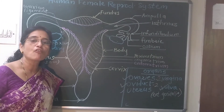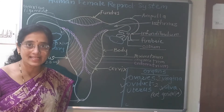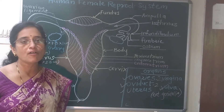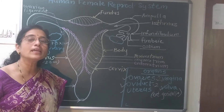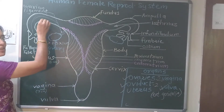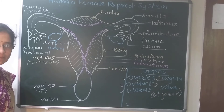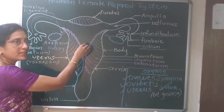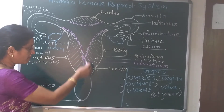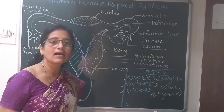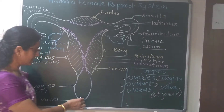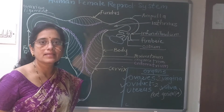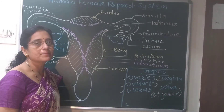This system performs the function of formation of gametes. Eggs or ovum is the female gamete. So the female reproductive system performs the function of formation of female gametes, union of male and female gametes — that is fertilization — which also takes place in the female reproductive system. Development of embryo and fetus takes place in the uterus, and after complete development of the baby, from the birth canal the baby is delivered out. This is the function of vagina and vulva. So this is the complete function of the female reproductive system.